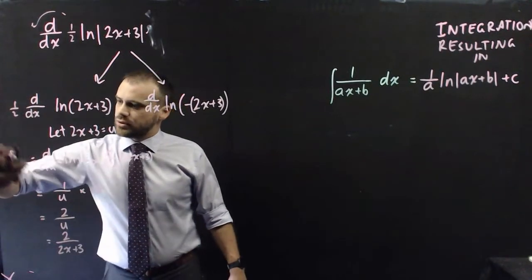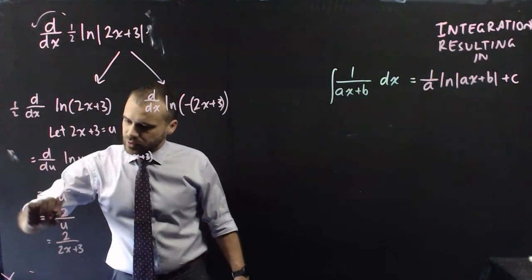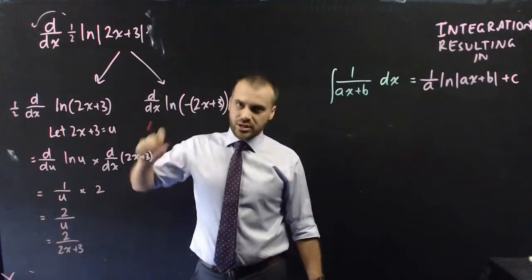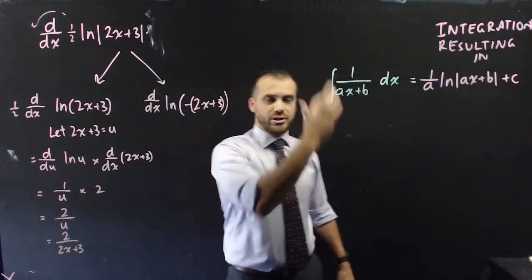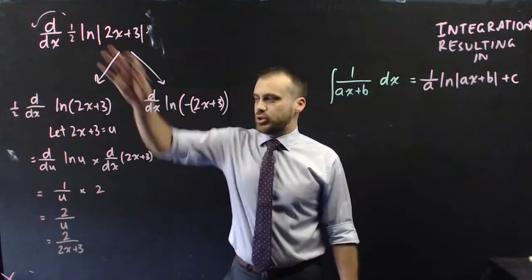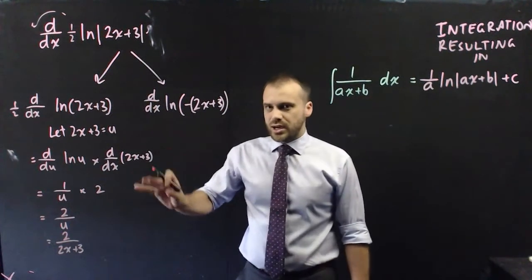we have 1 on half, 1 half there, 1 half there, 1 half there. We get 1 half times 2 on 2x plus 3, which gets rid of that 2 and brings us to our 1. I'm not going to do that here, but you can see how close we are.